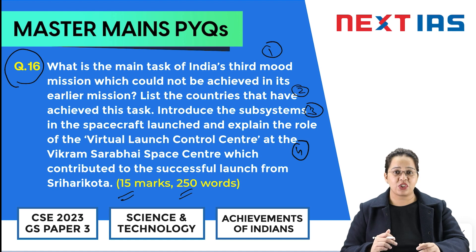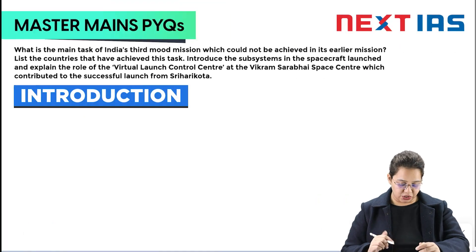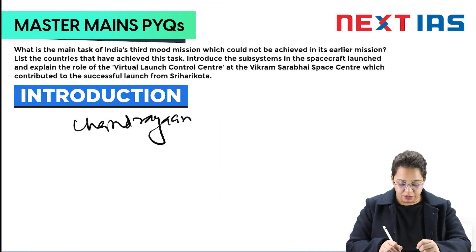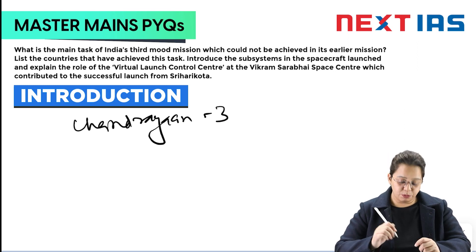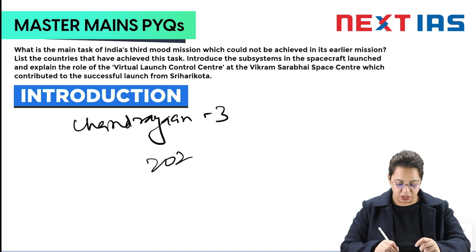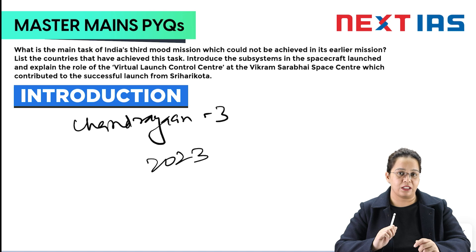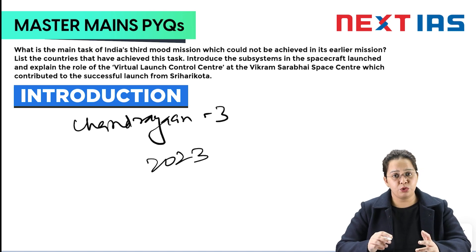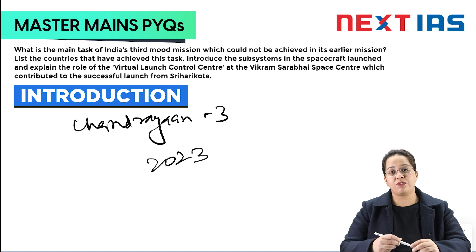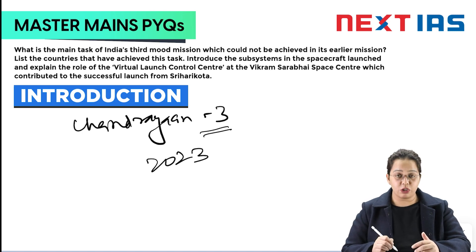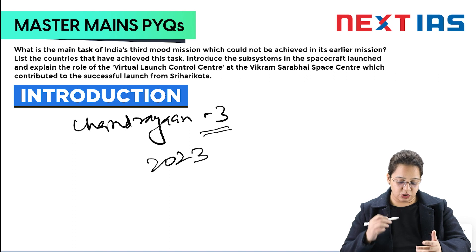Now let's start with the question. In the introduction part, Chandrayaan 3 mission is one of the most ambitious programs of India and is part of ISRO's moon missions. It was launched in 2023 from Satish Dhawan Space Center situated at Sriharikota. Such space missions have broader objectives of enhancing our space capabilities, doing more research, and enhancing our technology capabilities.